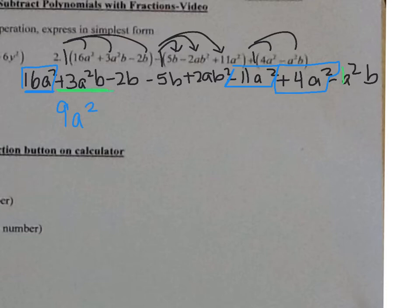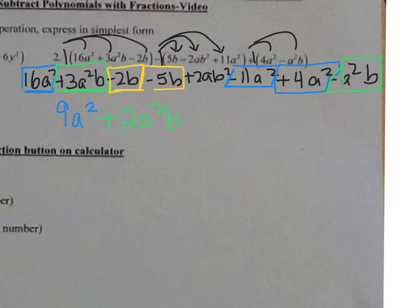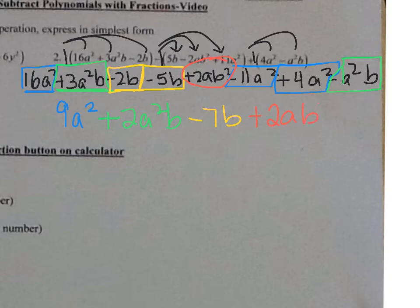Next we have a squared b — positive 3a squared b. I'm looking for another a squared b. Not here, not here — but down here I have a negative 1a squared b; remember there's a 1 in front of that. So we have 3 minus 1 is 2, so that would be positive 2a squared b. Next I have just a b: negative 2b and negative 5b. Negative 2 minus 5 is negative 7, so that's minus 7b. And I have the ab squared left with no other terms to combine, so I just tack it on to the end. That would be your final answer.